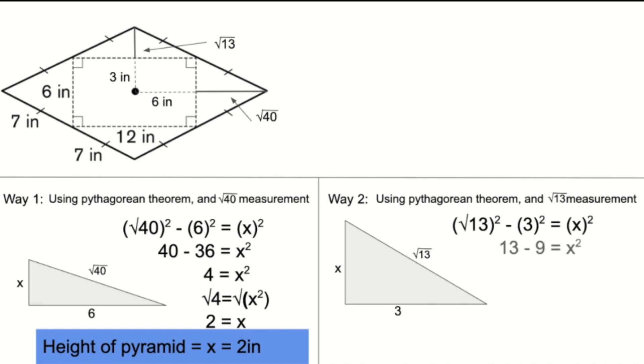After we insert the values into the Pythagorean theorem equation, we get 2 is equal to x, and so we know the height of the pyramid has to equal 2 inches.